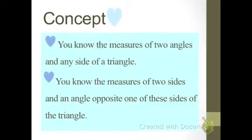Concept: you know the measures of two angles and any side of a triangle, or you know the measures of two sides and an angle opposite one of these sides of the triangle.